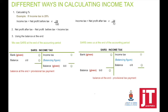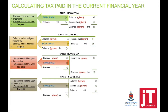Calculating your tax paid in the current financial year is very important when doing cash flow statements. To calculate your tax paid for this accounting period, open up your SARS income tax T-account, fill in the information you have, and find the missing information. Your unknown balancing figure will be bank, and that is the amount that will appear in your cash flow statement as income tax paid in this accounting period.